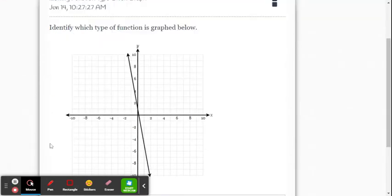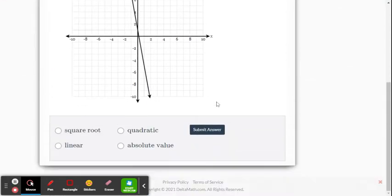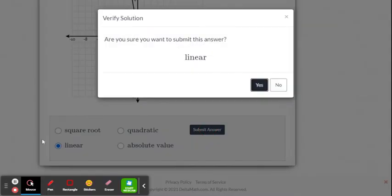Here's our next problem. It gives us a line. We know that is a linear function. So we select linear. Submit.